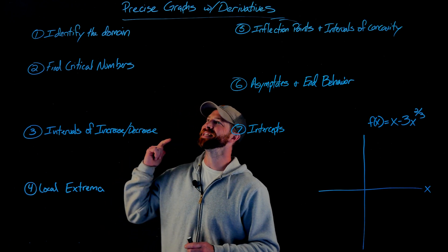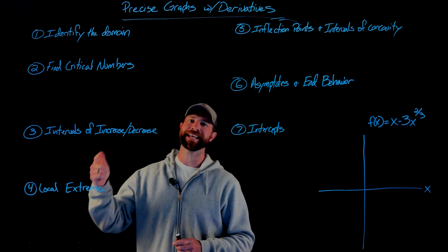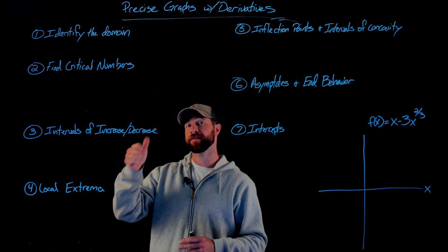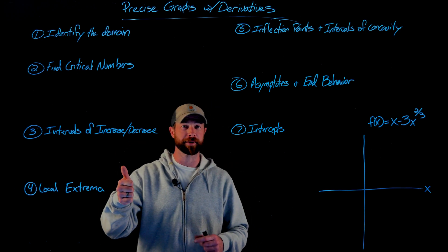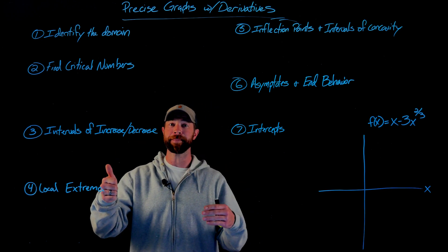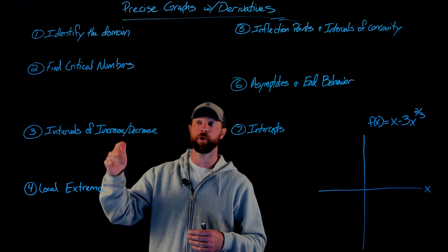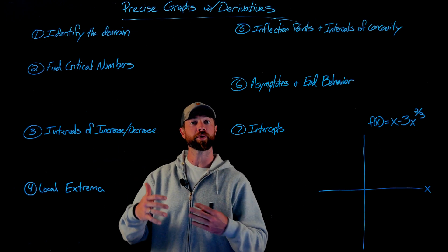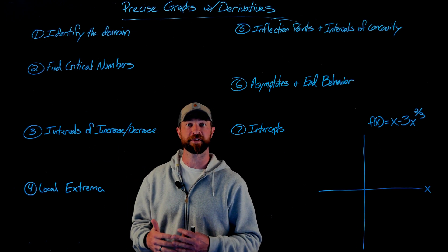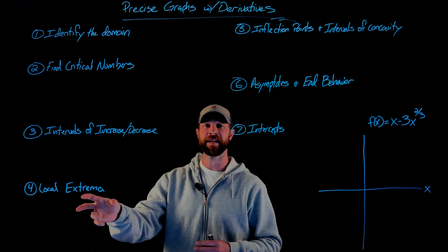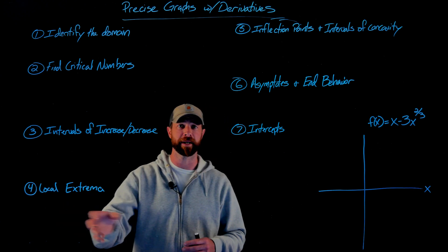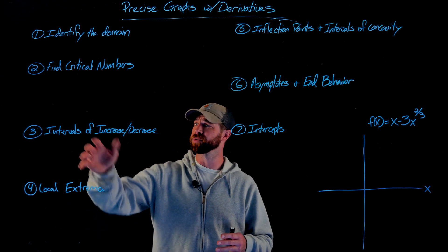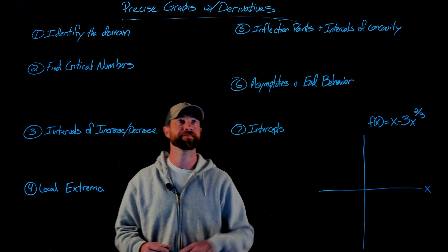Number one: identify the domain of your function. Number two: find the critical numbers. This sets up the work for number three and four, which is finding the intervals of increase and decrease of your function, then identifying the local extrema. The first derivative test will give us both of these at the same time.